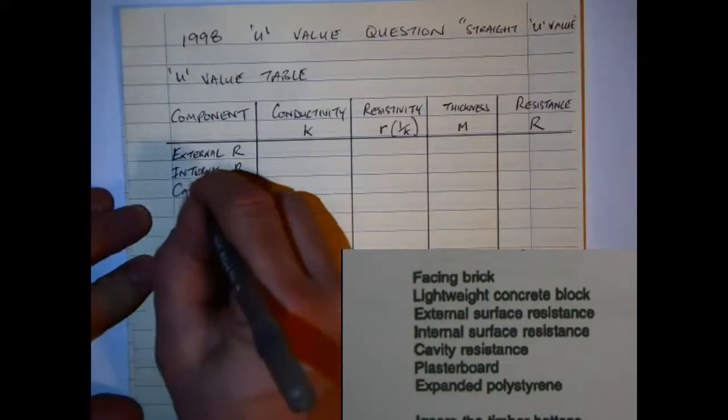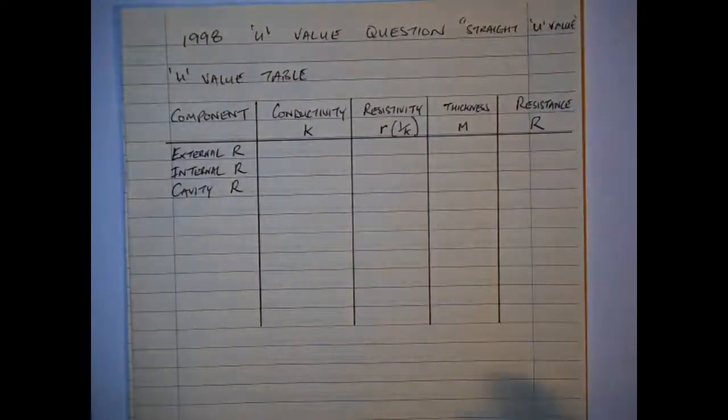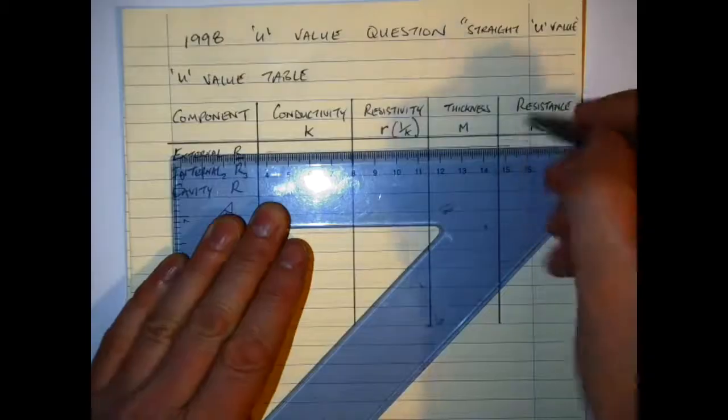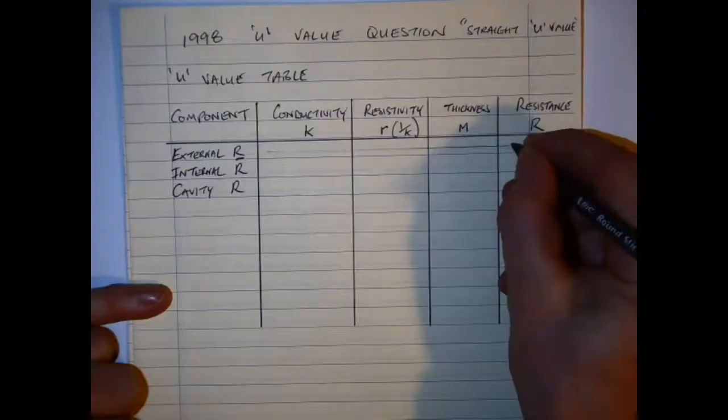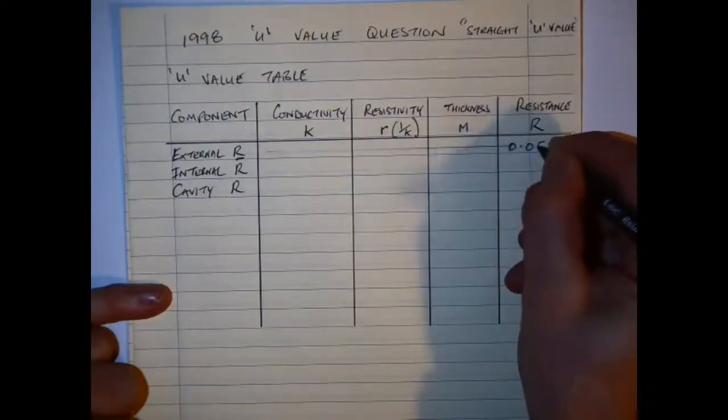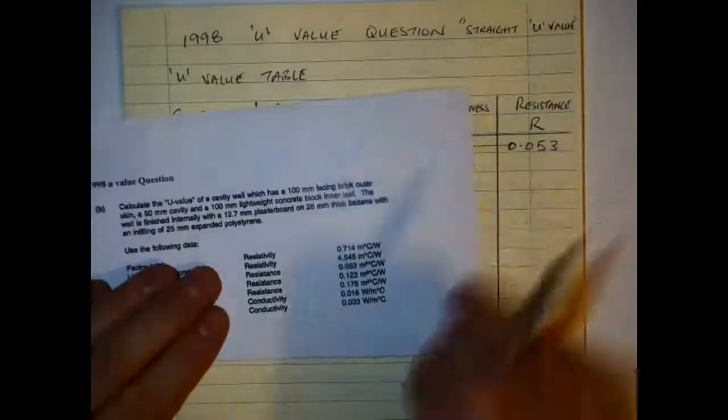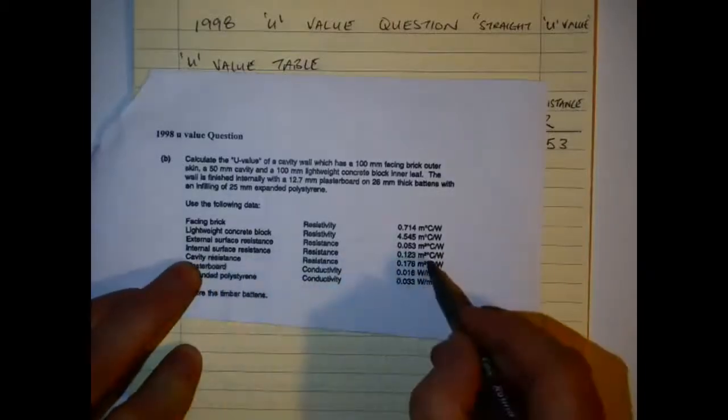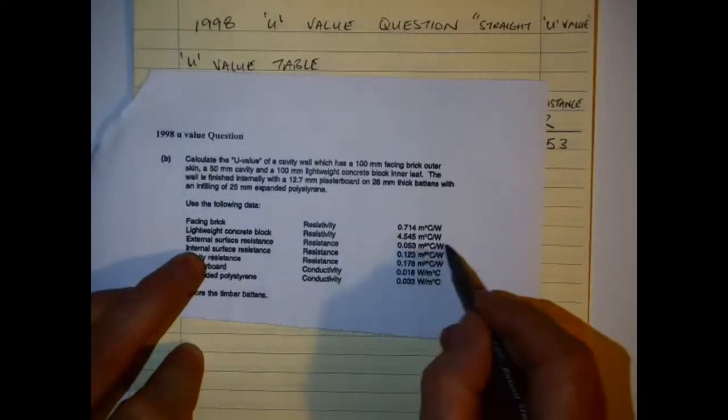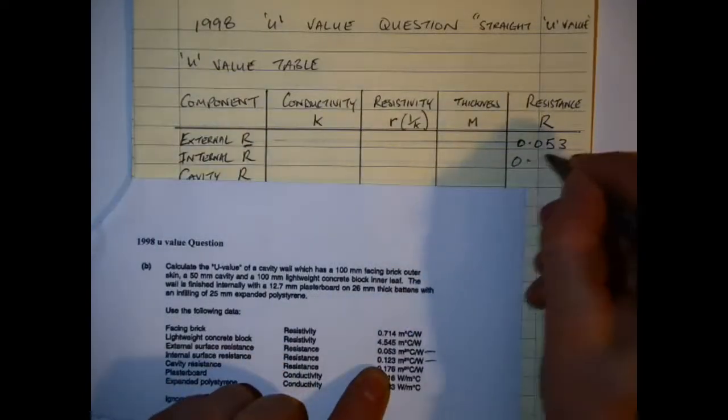So the figures that we have for each of these from the question, we just enter them right over in the resistance column over here on the right hand side. So each of these are just transferred from the information that you're given for the resistance. For the external I enter it here, internal I'll be entering the value that you'll see here, and just to show that we have it here: 0.053 we have for the external, and then internal is 0.123, and the cavity resistance we have here is 0.176, and I add that in.